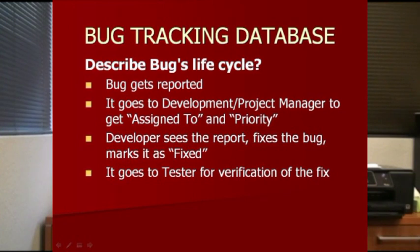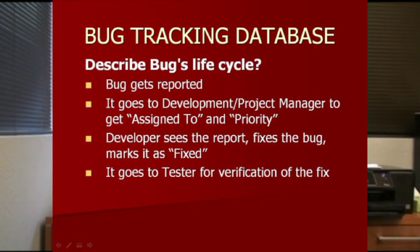The bug report goes to the developer to be fixed. The developer sees the new bug report, opens it, looks inside, fixes the bug, and marks it as fixed. There is a status field — when you first fill it out, the status is 'Open' by default. When the developer fixes it, it becomes 'Fixed.' Then it comes back to the tester to verify, and the tester closes it if it is really fixed. A developer cannot close the bug themselves.